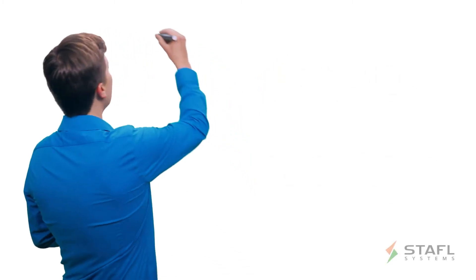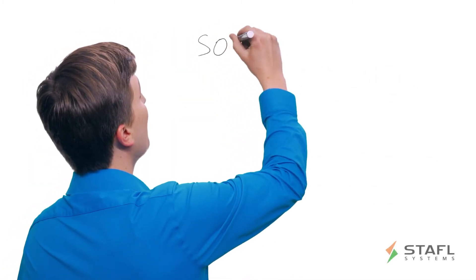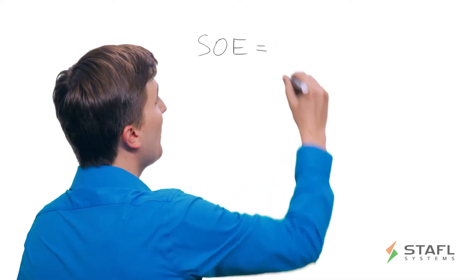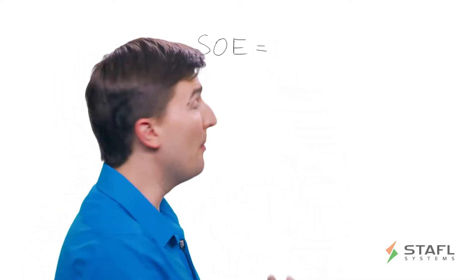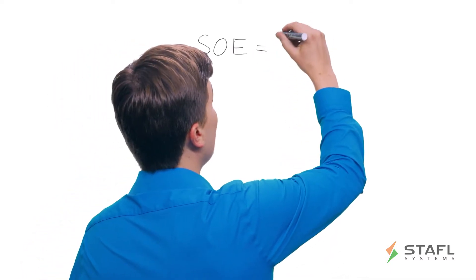So what is a safe operating envelope of a BMS? Well, we define it to be the maximum two things, actually.